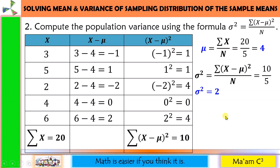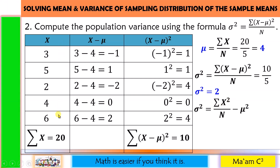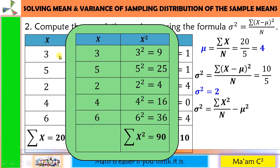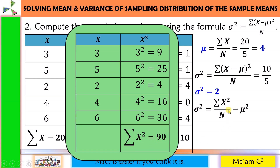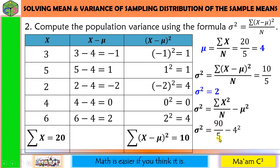I will introduce another formula to get the variance: summation of x squared, all over n, minus mu squared. We already have n and mu. We compute the summation of x squared by squaring each value: 3 squared is 9, 5 squared is 25, 2 squared is 4, 4 squared is 16, 6 squared is 36. Summing these gives 90. Substituting: 90 divided by 5 is 18; 4 squared is 16; 18 minus 16 equals 2. Same answer.